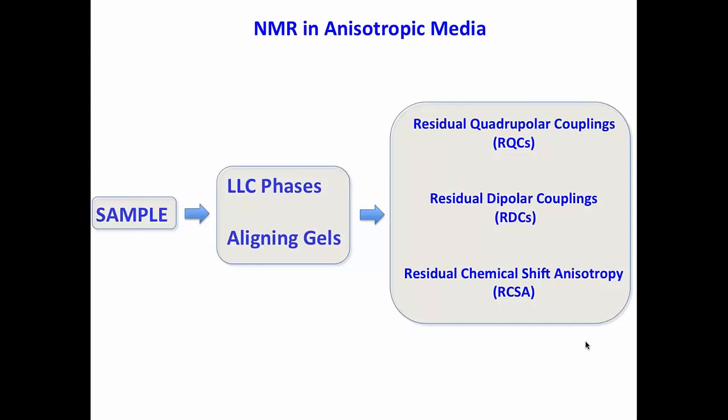So let's go to NMR in anisotropic medium. So we know now, you've already seen my trilogy about RDCs. So you have a sample. If you put this sample in a lyotropic liquid crystalline phase, like PBLG, PLG, or in aligning gels, we can see these anisotropic NMR parameters. We can see residual quadrupolar couplings. We can see residual dipolar couplings, and we can see these relatively new residual chemical shift anisotropy.